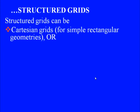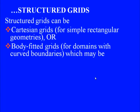Cartesian grids are the simplest and are preferable for simple rectangular geometries; recently they are also used for arbitrarily complex geometries in conjunction with immersed boundary techniques. Body-fitted grids are used for domains with curved boundaries and can be either orthogonal — where curvilinear grid lines are perpendicular at grid points — or non-orthogonal, where curvilinear grid lines intersect obliquely at an angle that is not 90 degrees.